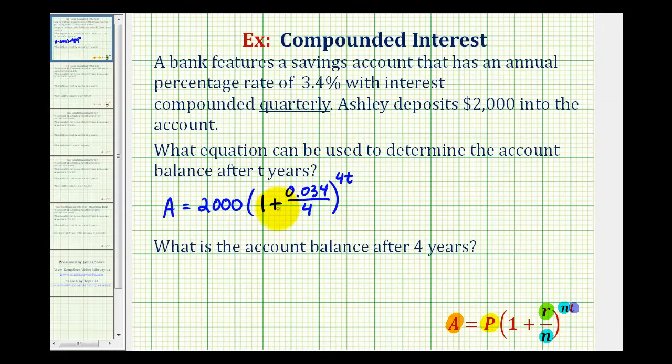So notice by dividing the annual interest rate by four, this would be the quarterly interest rate, and then multiplying four times the number of years, this exponent would be the number of quarters.